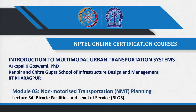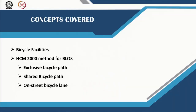Welcome back. In this lecture we are going to introduce you to bicycle facilities and how to measure the level of service of bicycles. We have already looked at how to determine the level of service of pedestrian facilities and sidewalks in an urban area. Now we are going to introduce you to the different bicycle facilities and how to measure the level of service using the HCM 2000 method.